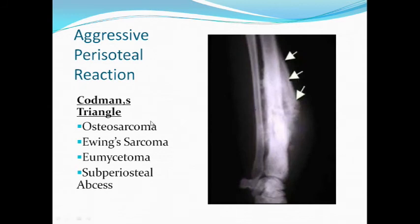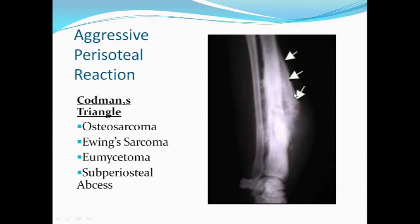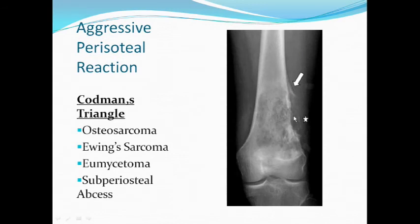Another type of aggressive periosteal reaction is Codman's triangle, classically seen in osteosarcoma but can be seen in other tumours. At the centre of the lesion the tumour has grown so fast that it has burst through the periosteum, while at the periphery the periosteum has been lifted off and filled with new bone formation, giving rise to a triangular periosteal reaction known as Codman's triangle. An X-ray demonstrates this clearly: the centre of the tumour has burst through the periosteum, but at the periphery the triangular tent of lifted periosteum gives the characteristic triangular shape.